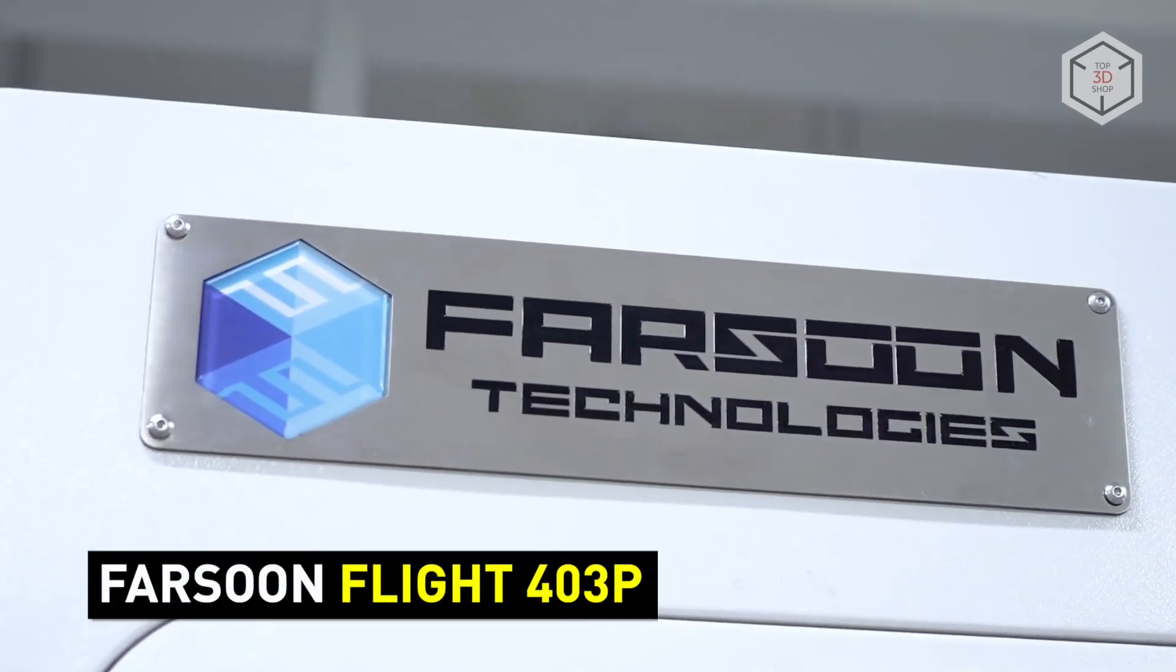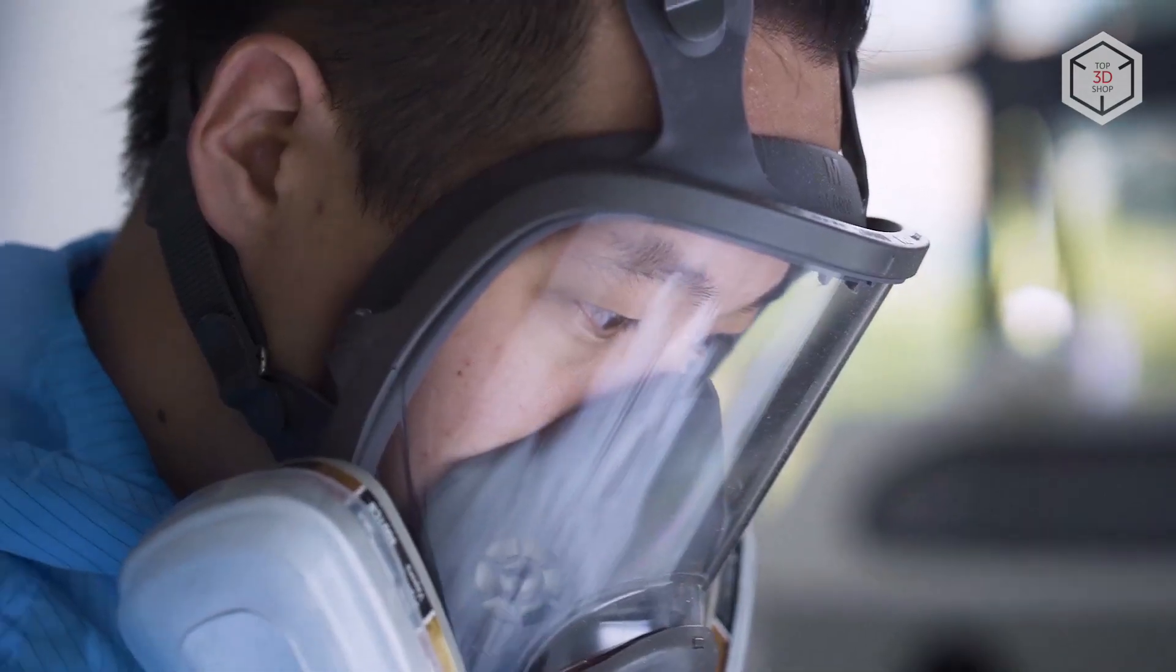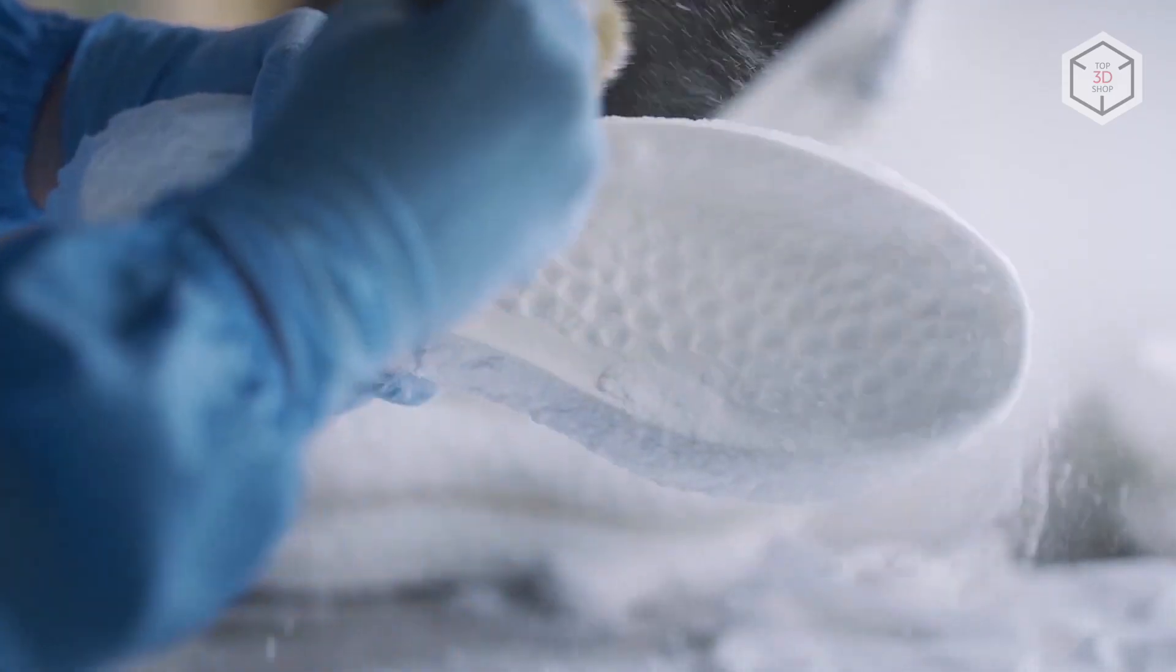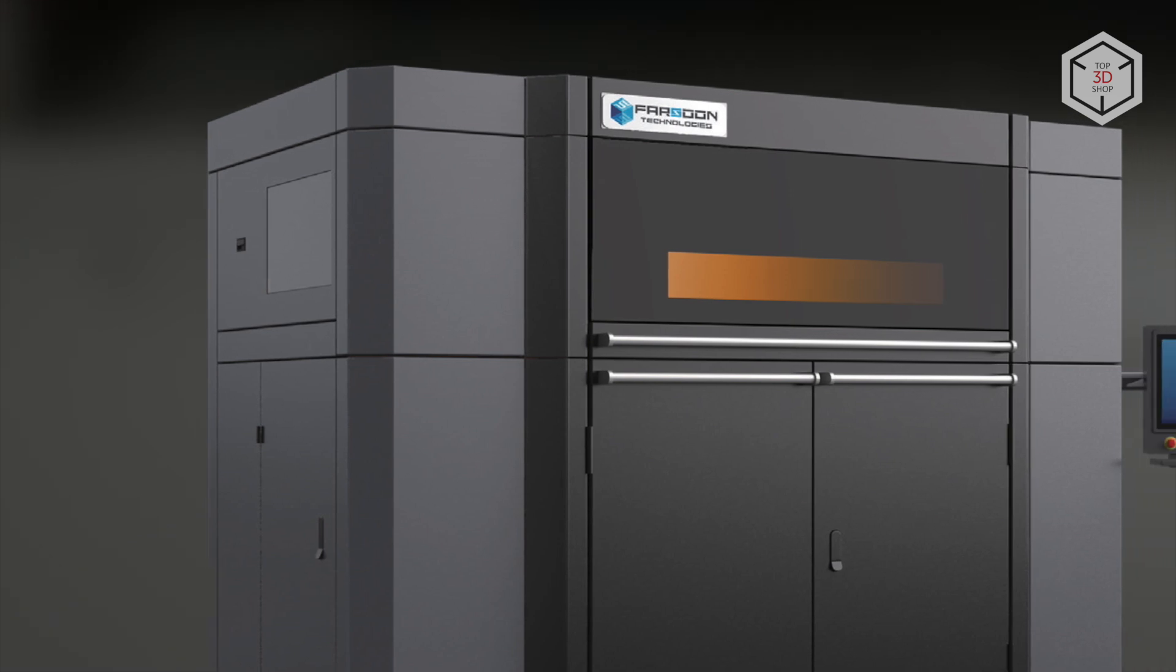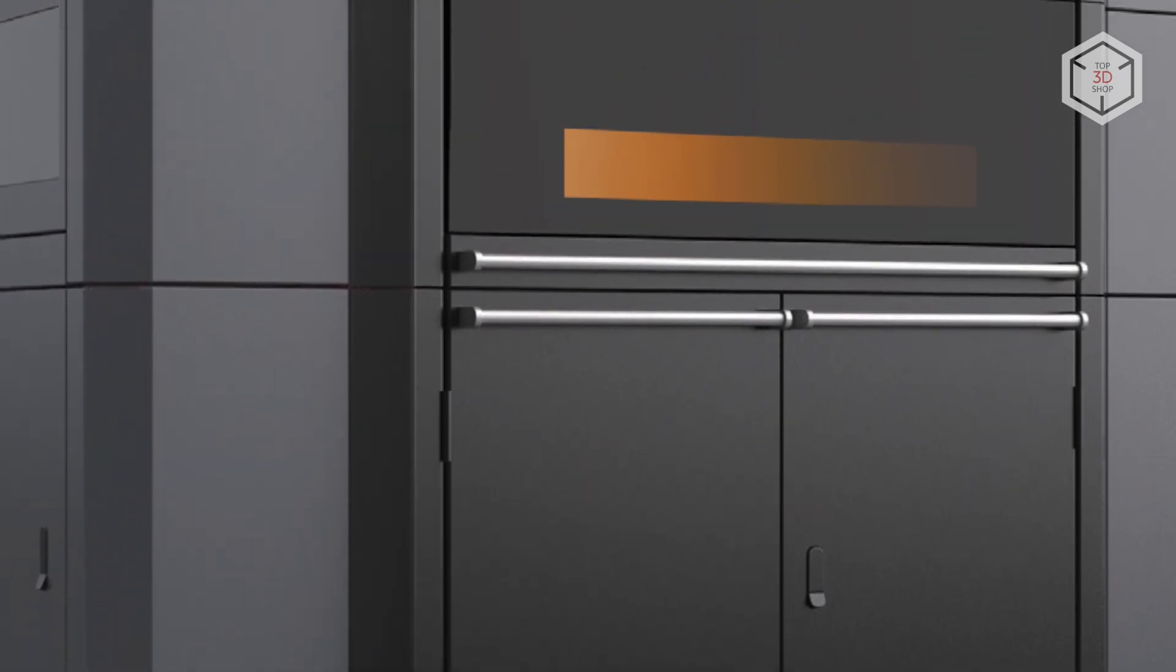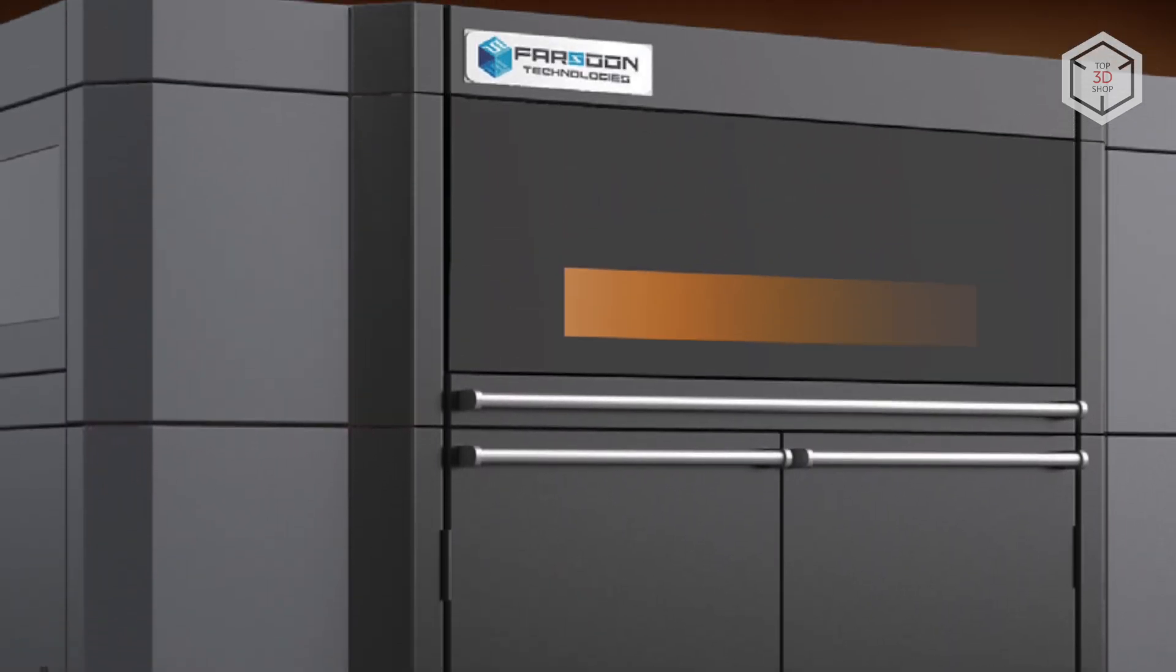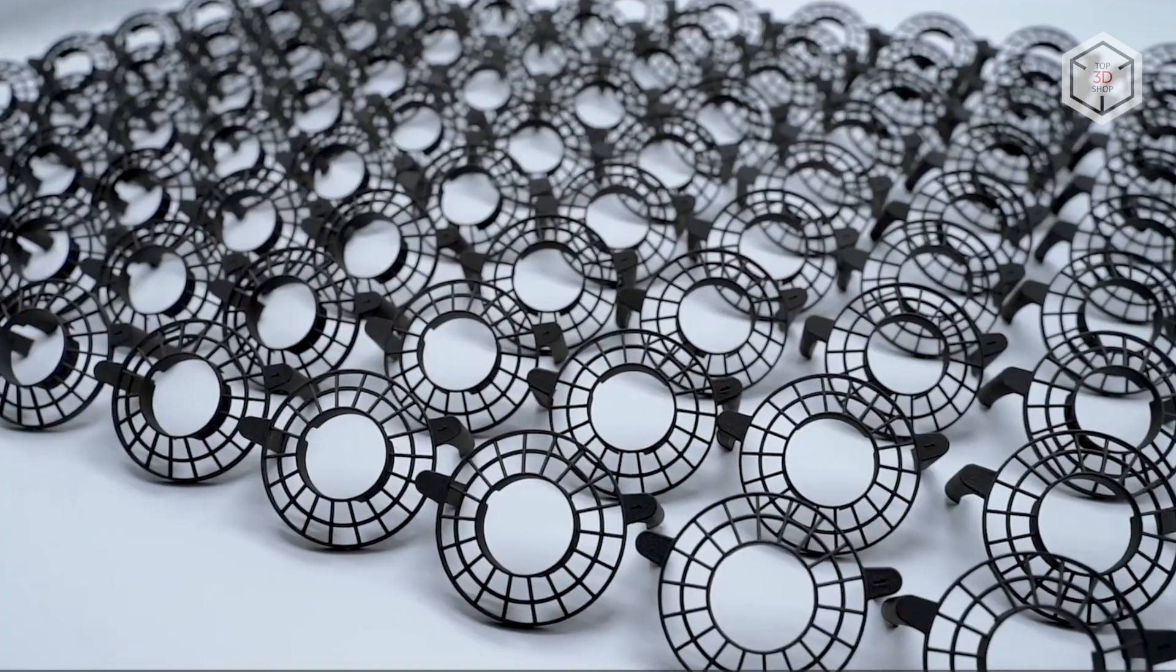The Farsoon Flight 403P features fiber light technology, which uses more powerful fiber lasers instead of carbon dioxide ones utilized in most industrial printers. This allows for extremely high printing speed. The system of the device is open, so you are free to use third-party consumables. The series includes two models, Flight SS-403P and Flight HT-403P. The difference between them lies in the maximum temperature, which is higher for the HT-403P model, 190 and 220 degrees respectively. Due to the flight technology, the 403P series provides highly detailed prints in a short time, compared to its competitors.